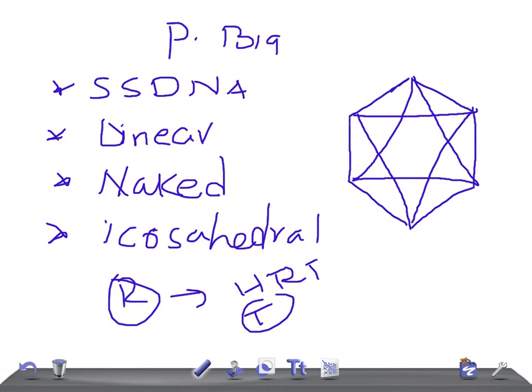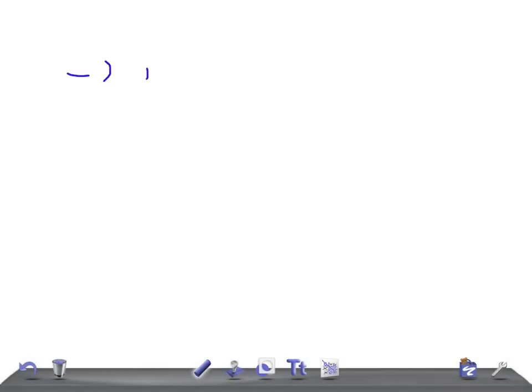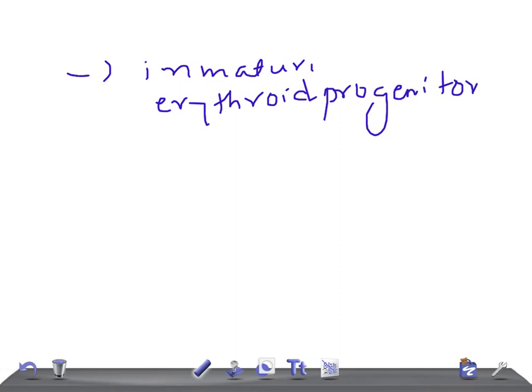What is the pathogenesis? Pathogenesis: it affects the immature erythroid progenitor cells, resulting in cell lysis. Once the cell is lysed, it results in anemia.